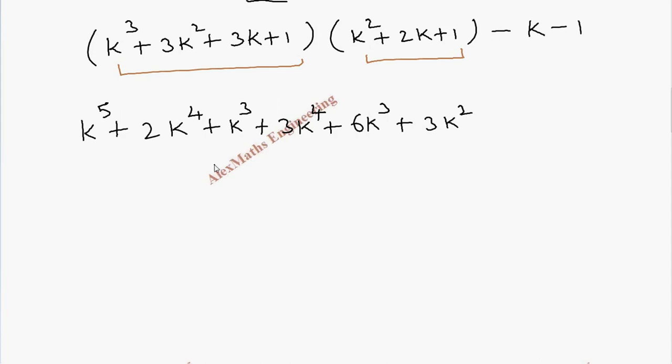So I will write it here: plus 3k^3 plus 6k^2 plus 3k, then k^2 plus 2k plus 1, then minus k minus 1. Let's combine the like terms.